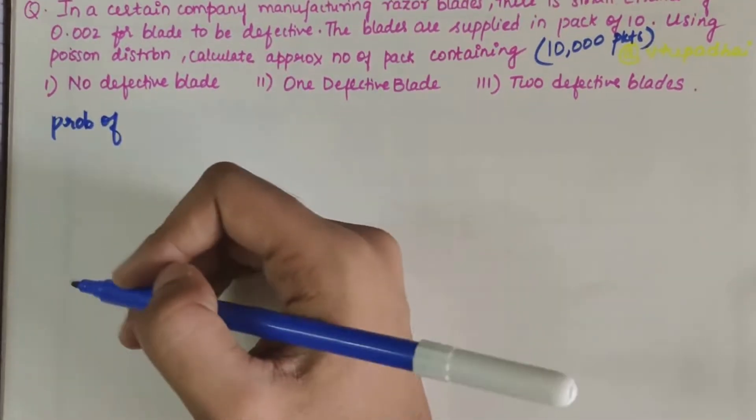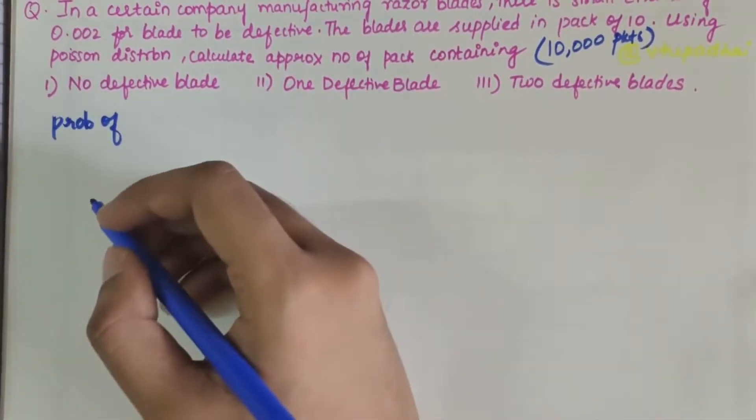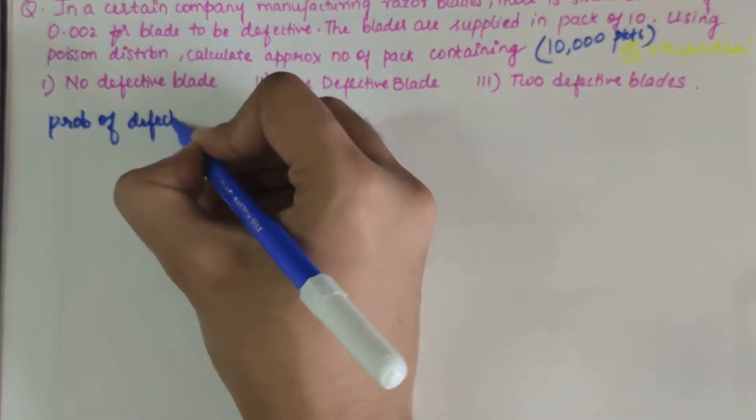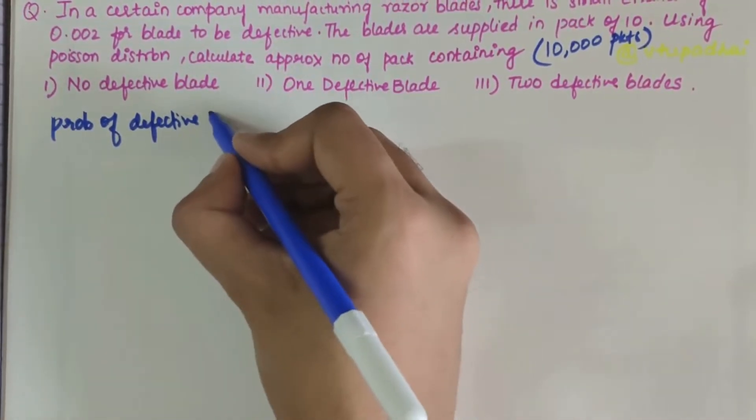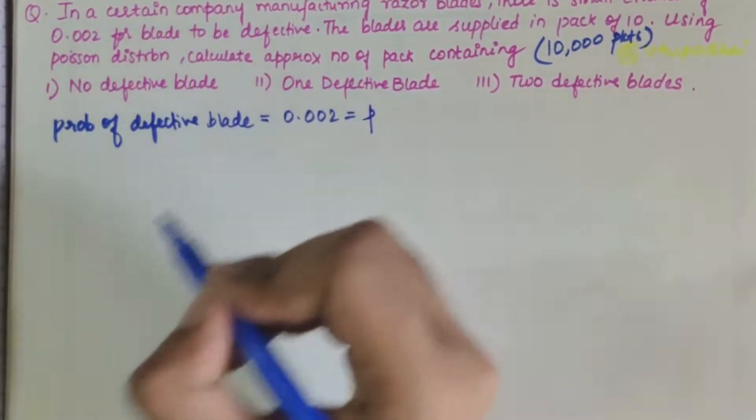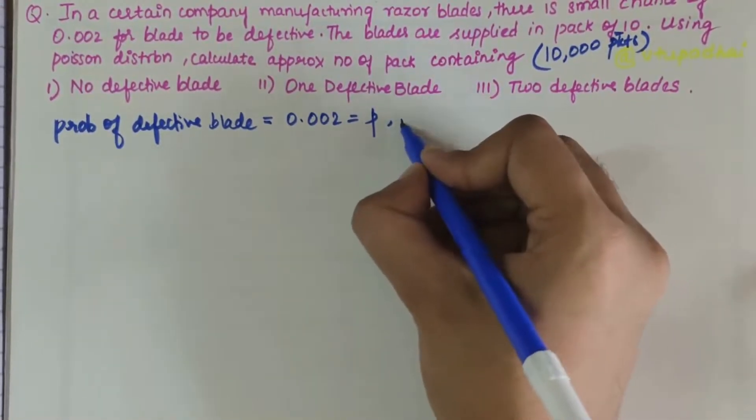Let's write down all the given information and derive a common equation. The probability of a defective blade, P, is 0.002. And N value is 10.